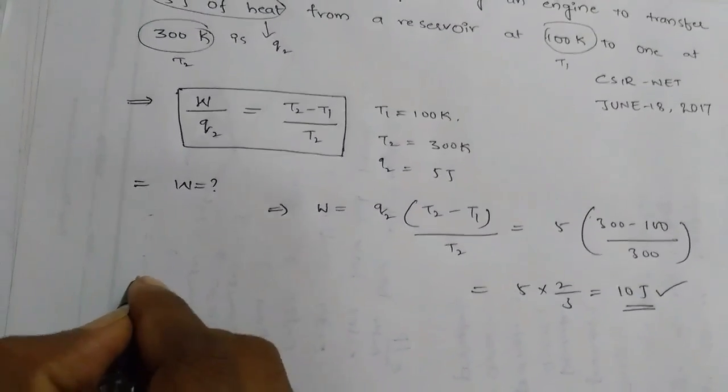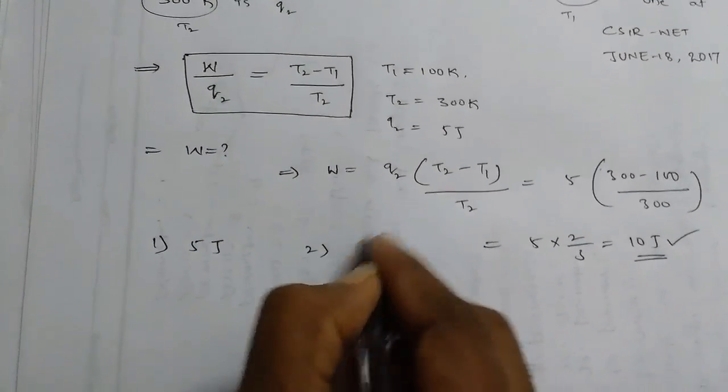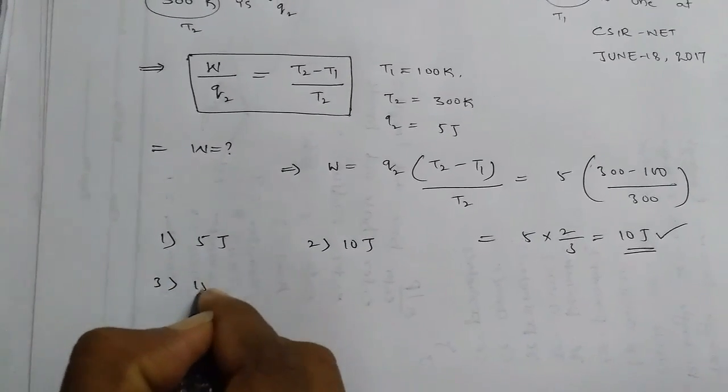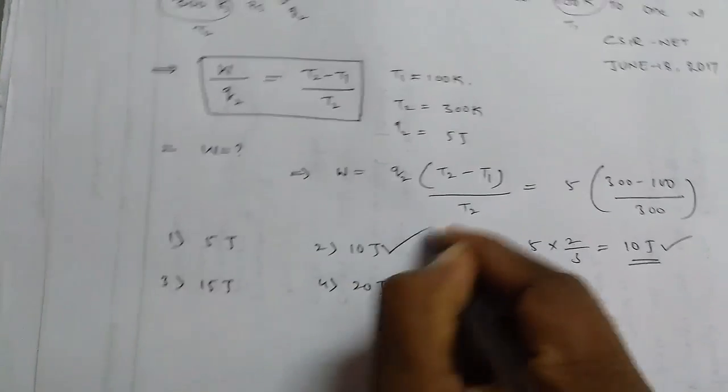The options are: 1) 5 joules, 2) 10 joules, 3) 15 joules, 4) 20 joules. So the answer is option 2.